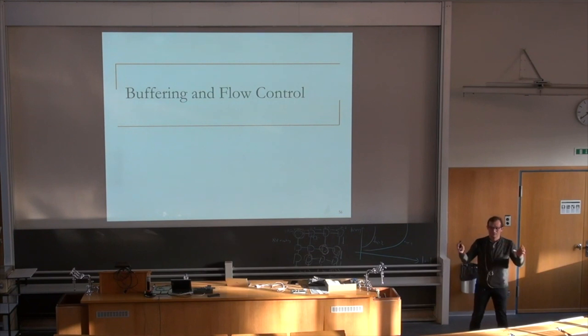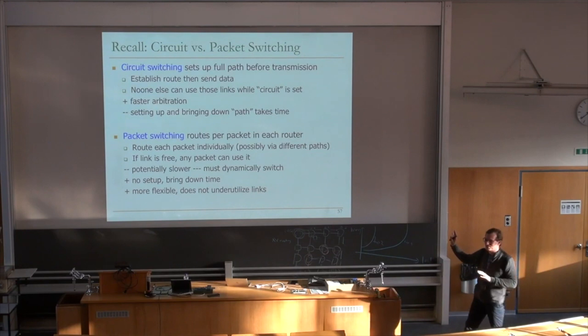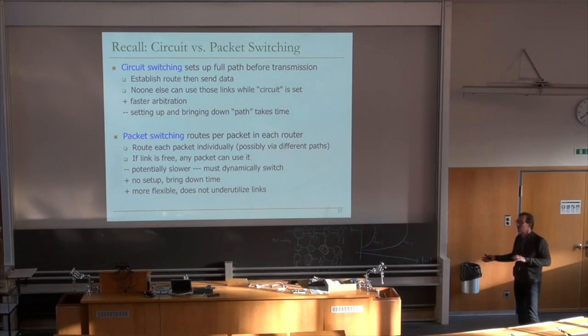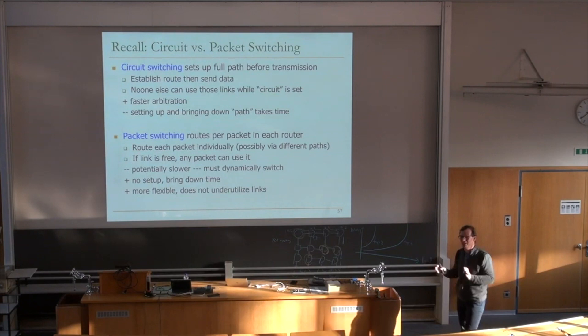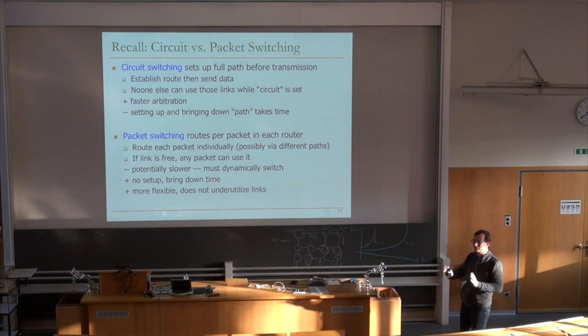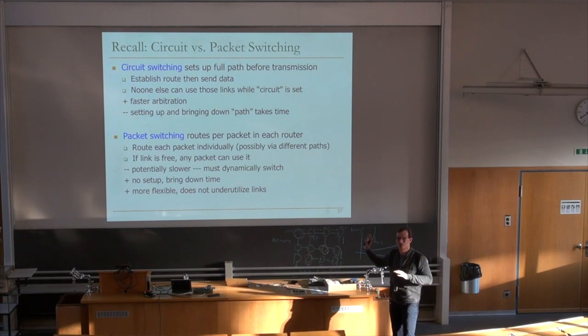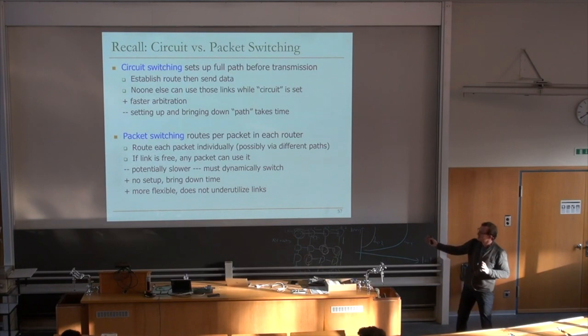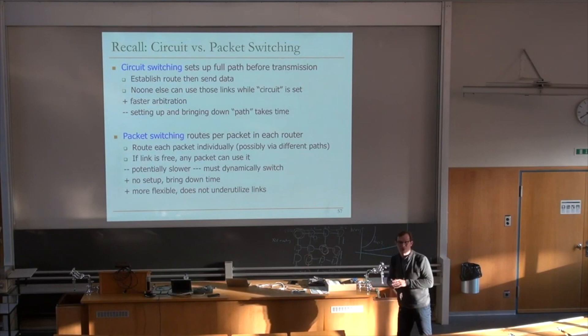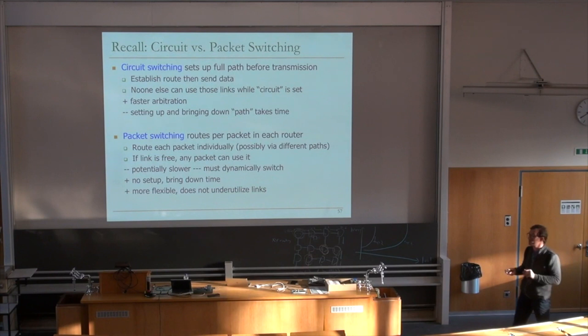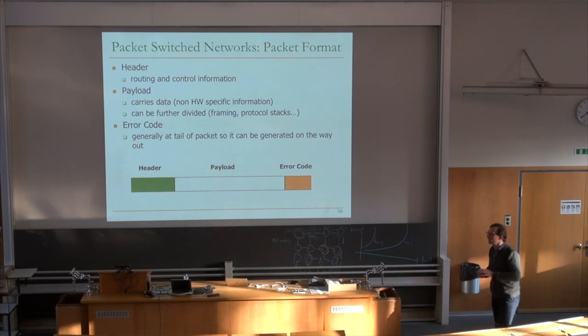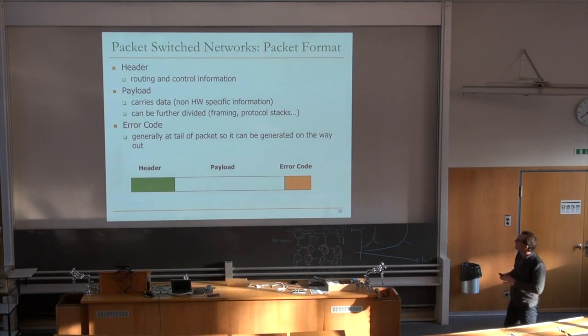Topology usually determines what kind of routing algorithm you want to implement. Circuit versus packet switching — this choice affects a lot of your buffering and flow control decisions. Circuit switching: you set up the path and don't need any buffers. Flow control is handled by setting up the path and isolating it. Packet switching, on the other hand, you may or may not need buffers, but you definitely need some flow control. I'm going to focus more on packet switching, but a lot of what we discuss is applicable to circuit switching.